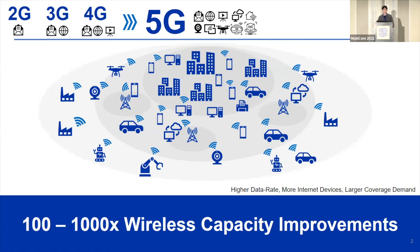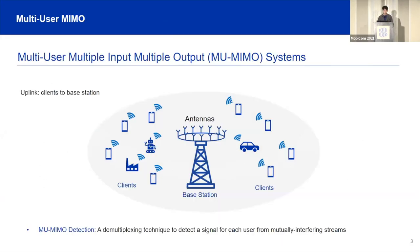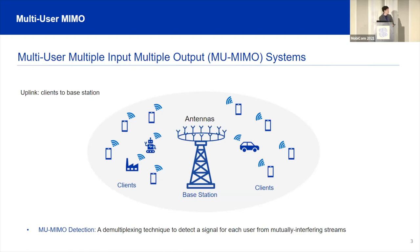As the generations of wireless networks have evolved, many more devices have been deployed and many more various wireless applications and services have become available. With this trend, in 5G, 102,000 times of wireless capacity improvements are expected. Multi-user MIMO systems are very promising since they can enable parallel streams to support multiple users simultaneously, especially for uplink systems. For that, the base station needs to demultiplex the mutual interference signals to detect which signal is from which device. This technique is called MU-MIMO detection.